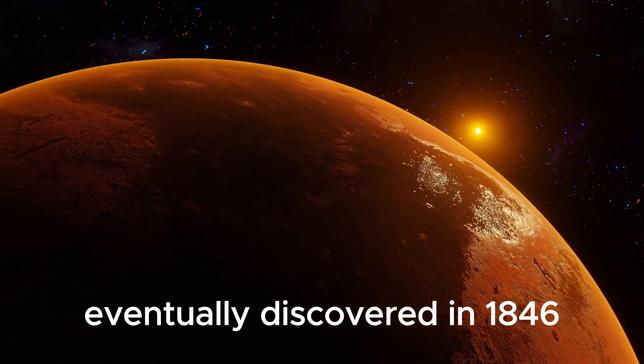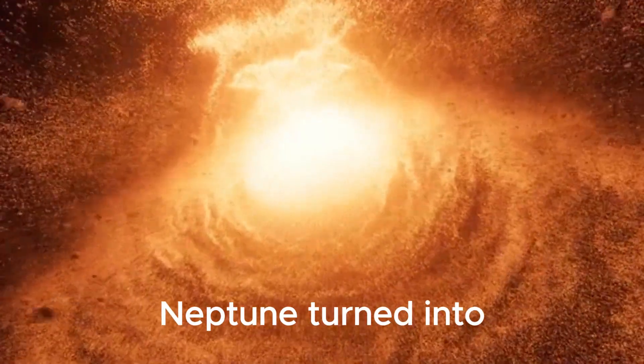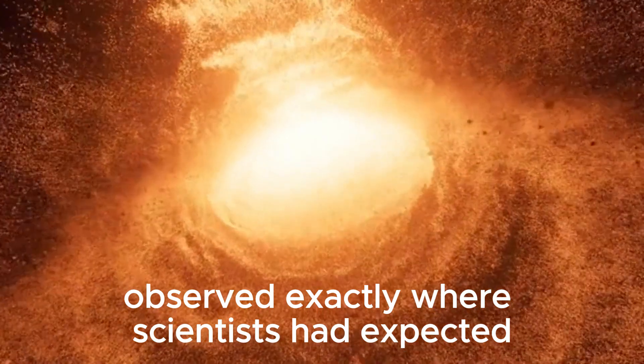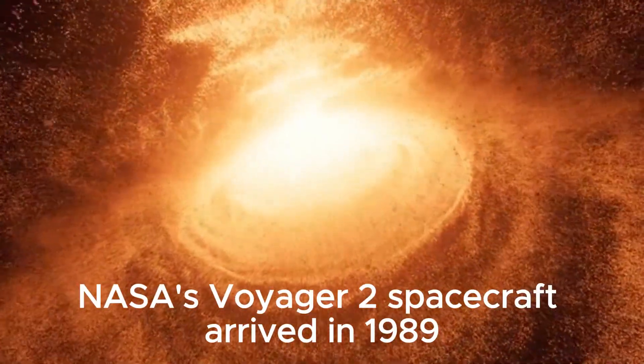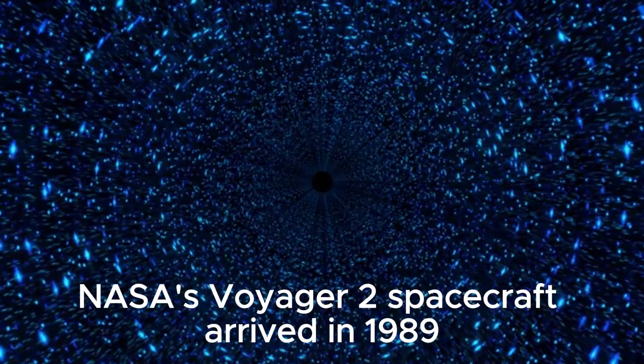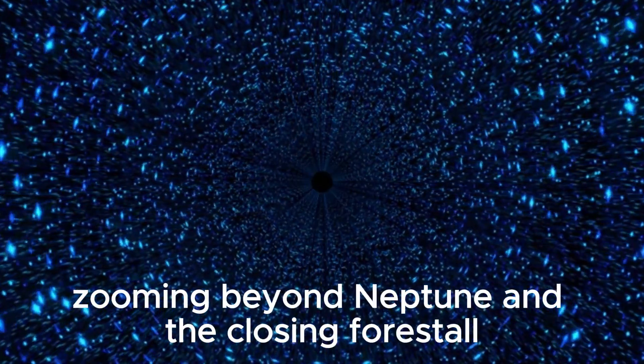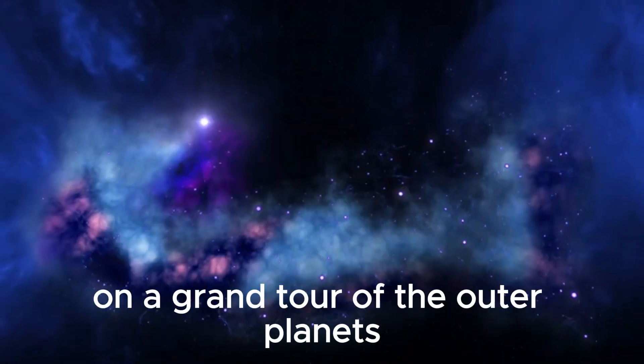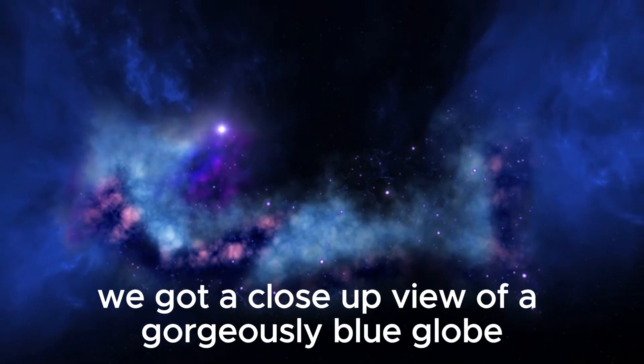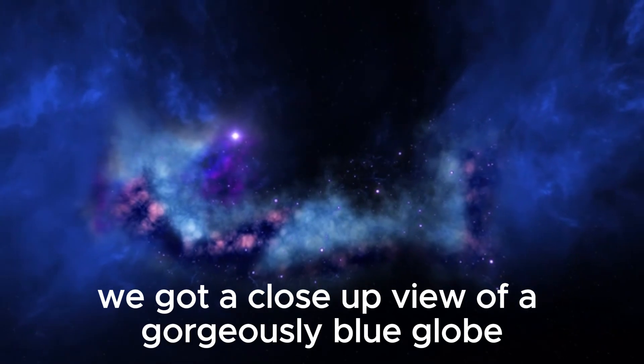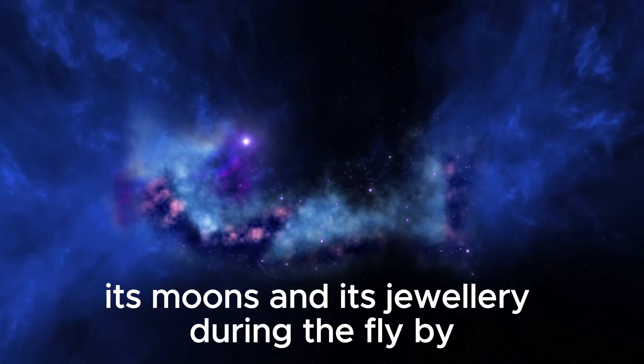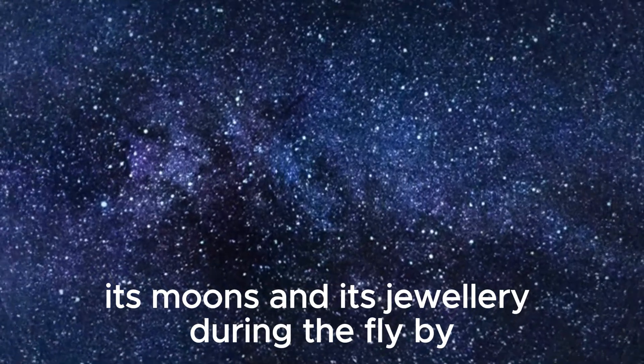Eventually discovered in 1846, Neptune turned into observed exactly where scientists had expected. NASA's Voyager 2 spacecraft arrived in 1989, a few years and technological improvements later, zooming beyond Neptune and the closing forestall on a grand tour of the outer planets. We got a close-up view of a gorgeously blue globe, its moons, and its jewelry during the flyby. Undoubtedly, Neptune has rings, despite the fact that not as beautiful as Saturn's.